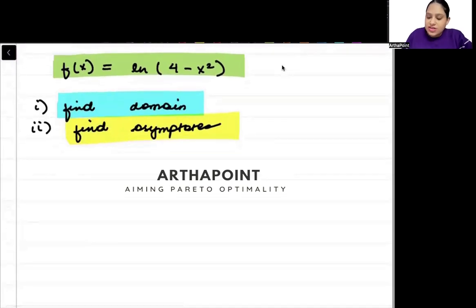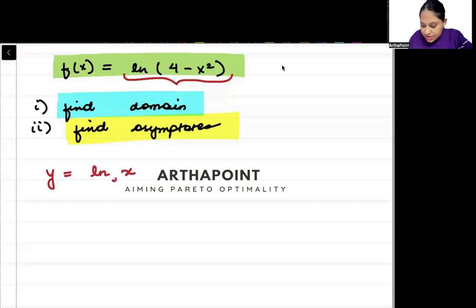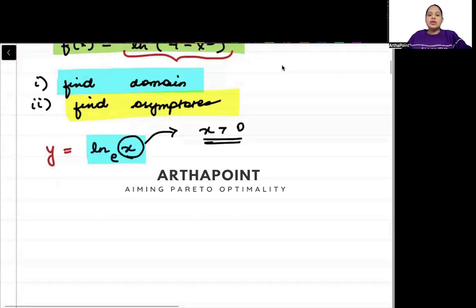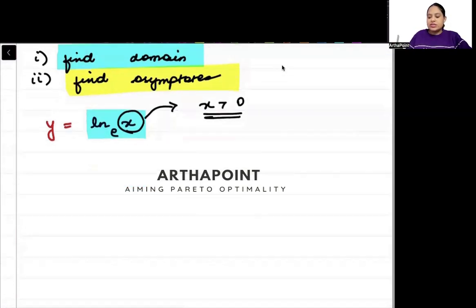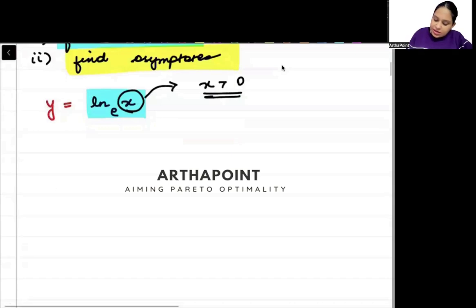First we need to understand how a log function looks. Whenever we have y equals ln(x) to the base e, whenever you have a log function, this log function is defined only when x can take positive values, for all values of x greater than 0. The log function is defined for all values of x greater than 0.